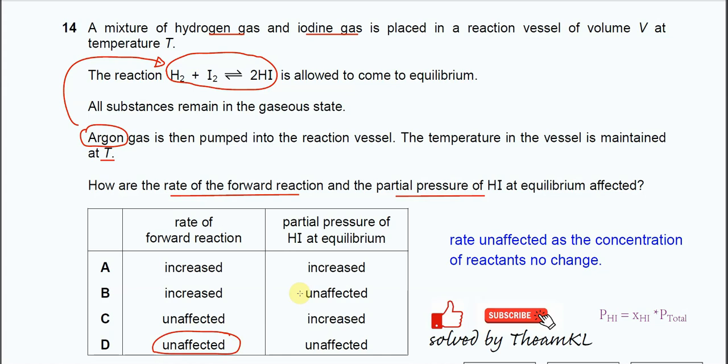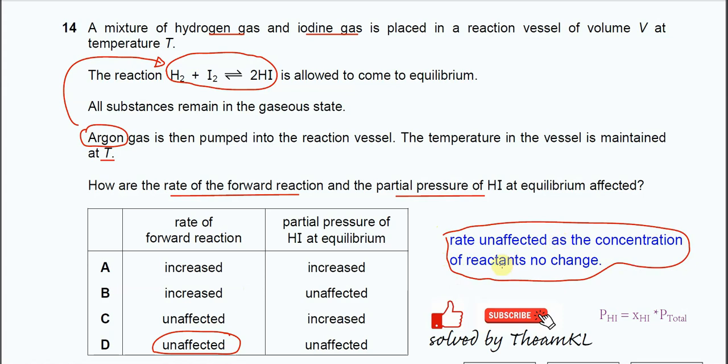The rate of reaction is affected by a few factors: temperature, surface area, concentration, and others. Since the concentration and temperature are both the same, the rate of the forward reaction will be unaffected — because the concentration of the reactants has not changed. That's the reason why.